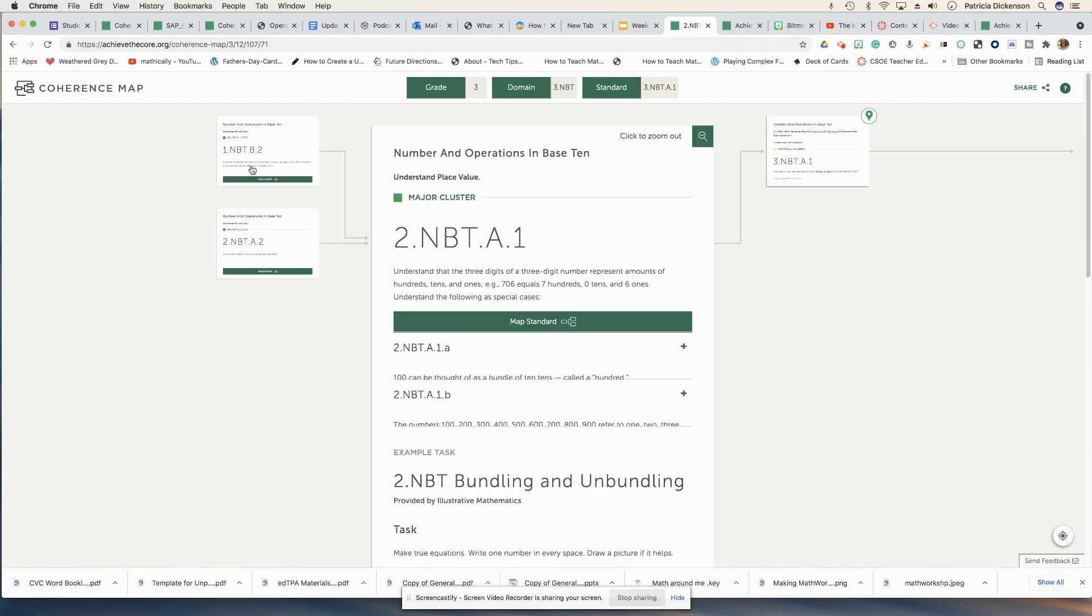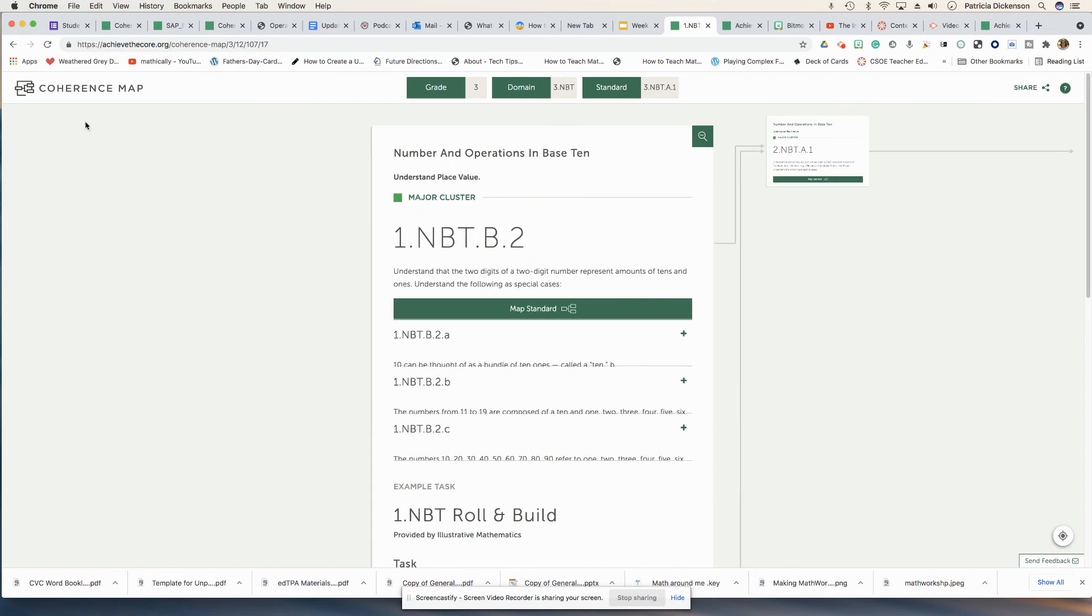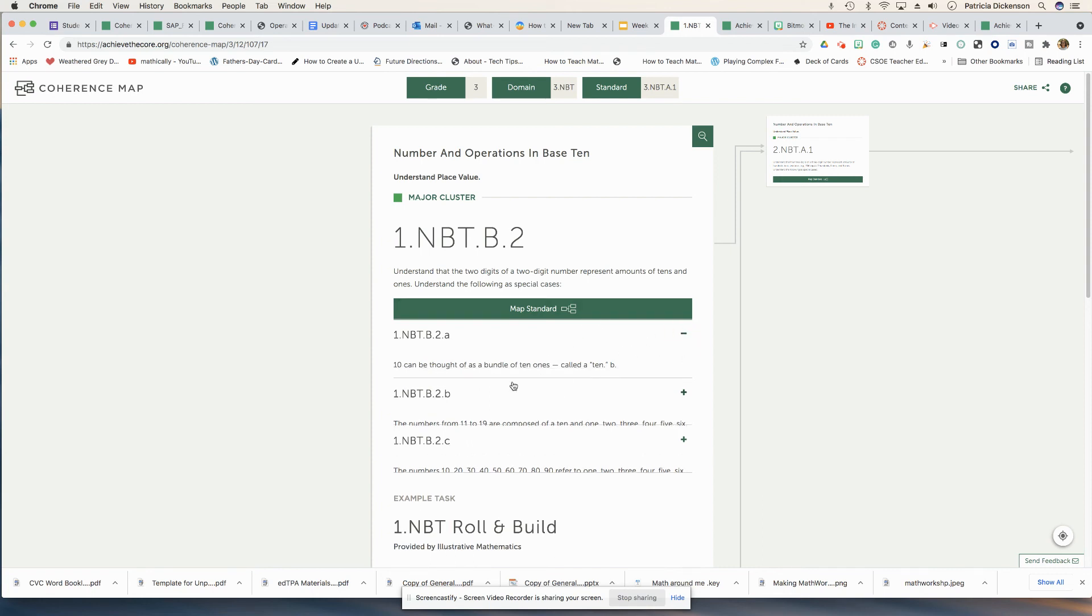Again, moving backwards, I can see what should they have learned in first grade in this particular standard. So I'm understanding place value. Now we're at first grade. I can see that my students should know that a 10 can be thought of as a bundle of 10 ones. We can expand that and see that particular standard. So very easy tool to use.